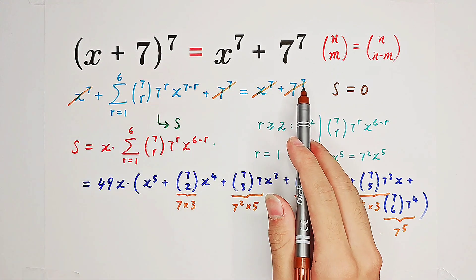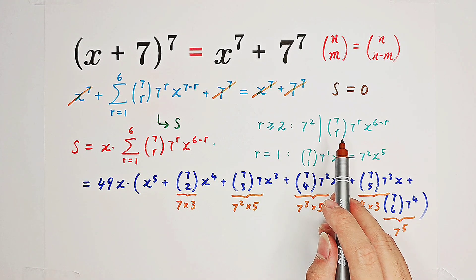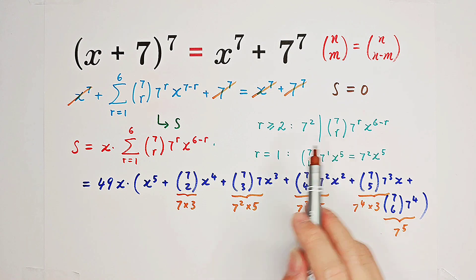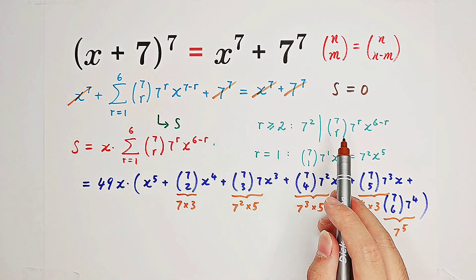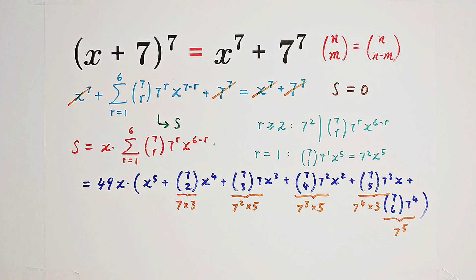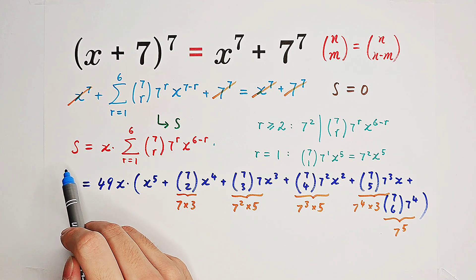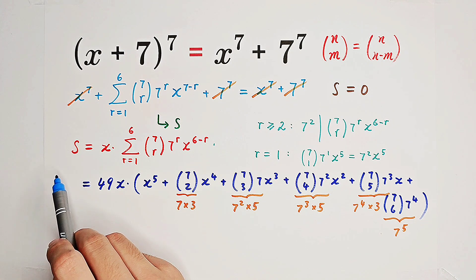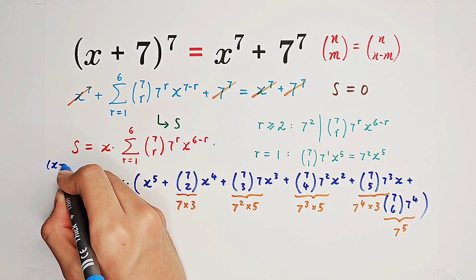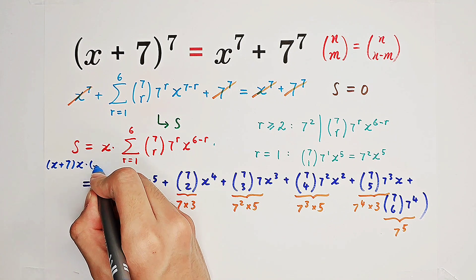Now, what are the solutions? Of course x equals 0 is one. There is actually another solution: x equals negative 7, because then both sides equal 0 and the equation holds. So x equals negative 7 is also a solution. This means S must contain the factors x and (x + 7), so S equals x times (x + 7) times something else.